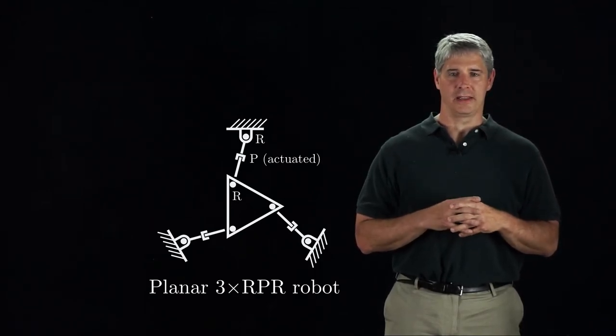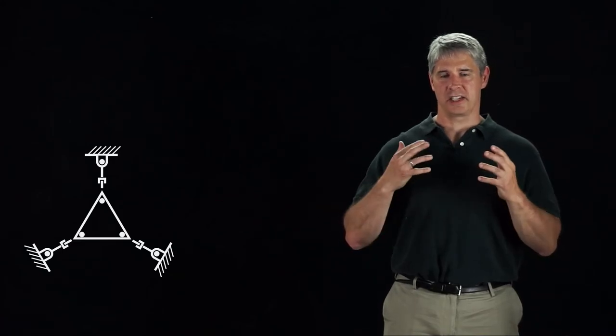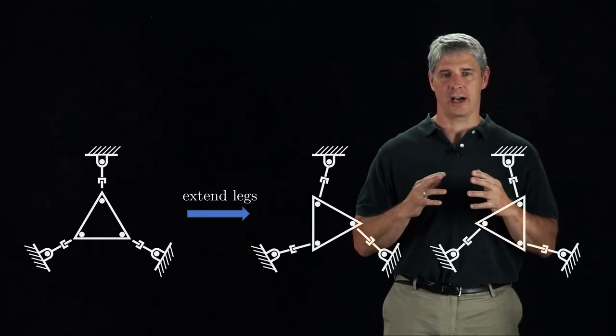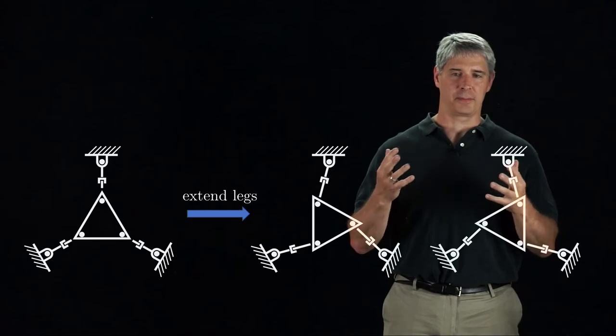If we put the robot at this configuration, it is at a singularity. From this configuration, if we extend the legs at an equal rate, the platform could either rotate counterclockwise or clockwise, and we can't predict which.